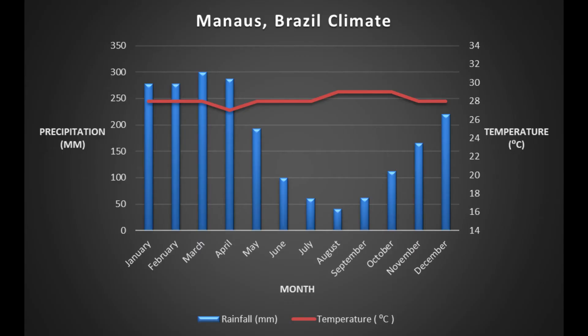The biggest mistake people often make is confusing the rainfall and temperature axes. In this example, the rainfall measurements are on the left while the temperature is on the right. Various sources often display these differently, so make sure you make note of the different values for each.